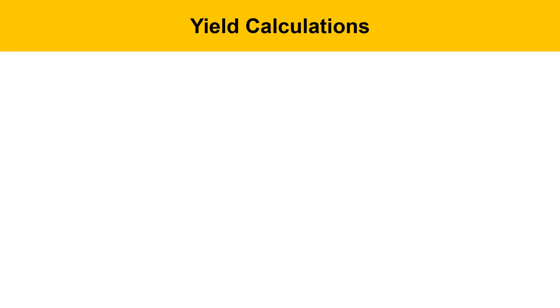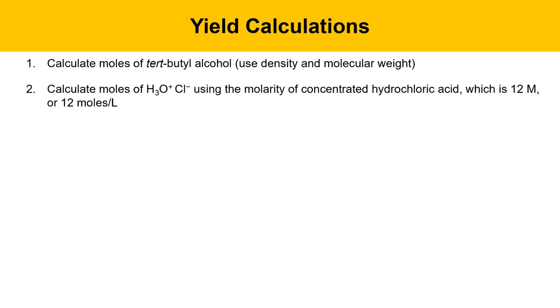Here are some yield calculations. First, you'll want to calculate the moles of tert-butyl alcohol that were used in the reaction, and you'll do that using the density of tert-butyl alcohol, which you'll have to look up, and the molecular weight, which you can calculate. That'll allow you to convert volume of tert-butyl alcohol into a mass of tert-butyl alcohol, and then molecular weight will allow you to convert it to moles.